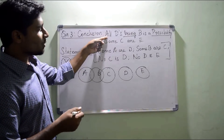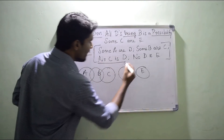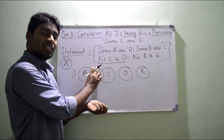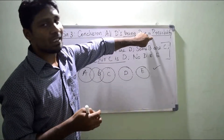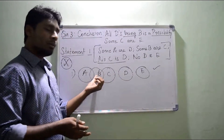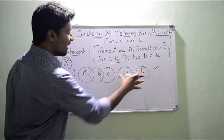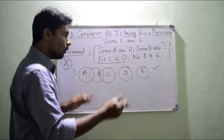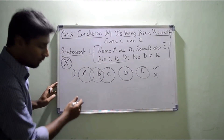Now we check the conclusions. Conclusion one: all D being B is a possibility. In the statements, no C is D — C and D are separate — but can all D come inside segment B? Is it possible? Yes, of course it is true. It's a possible segment because it is given as a possibility, meaning probability. So I have a chance that all D can come inside B without touching part C. Conclusion two: some C or E. Is there any connection between C and E in the given diagram? No, so it is false.